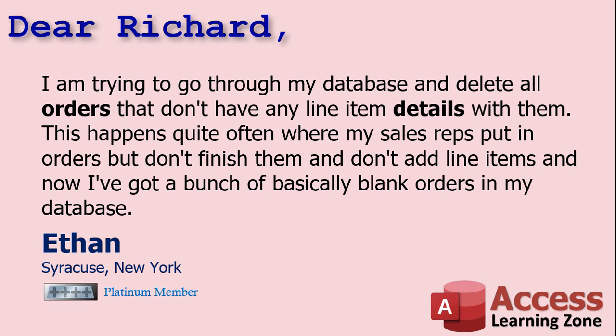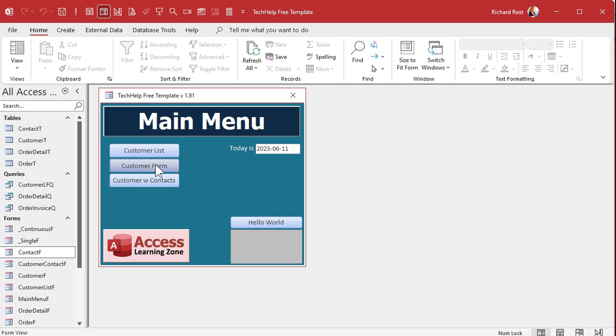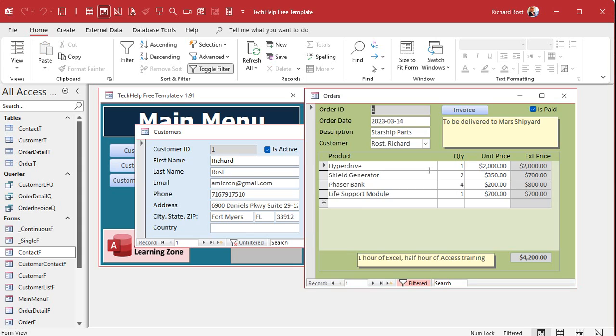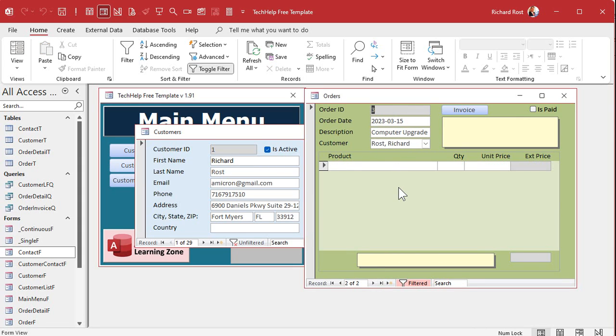Today's question comes from Ethan in Syracuse, New York, one of my platinum members. Ethan says he's trying to go through his database and delete all the orders that don't have any line item details. This happens quite often where sales reps put in orders but don't finish them and don't add line items, and now there's a bunch of basically blank orders in the database. It's basically like this: you've got your customers, you've got your orders — this one has details, this one has none — so you want to go through and clean all these out.